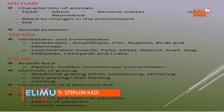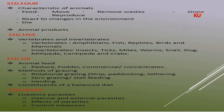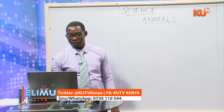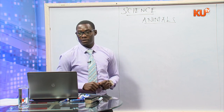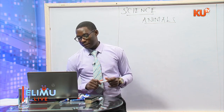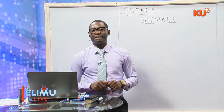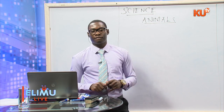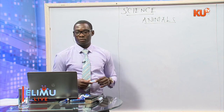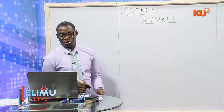In class 7, on the same topic, you learn about parasites and livestock. Livestock parasites include internal parasites found inside the body and external parasites found outside the body. An example of an internal parasite is a tapeworm; an example of an external parasite is a tick. The best control measure for internal parasites is deworming, and for external parasites it is dipping. The best overall control for both is rotational grazing.